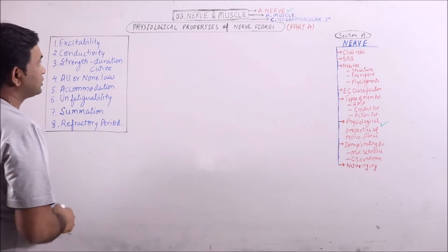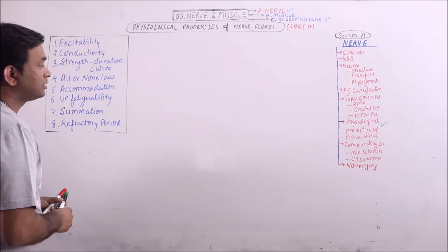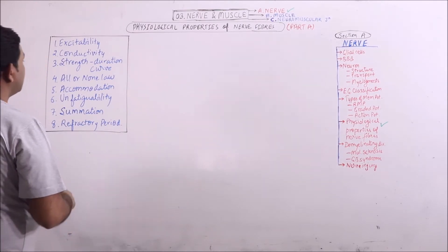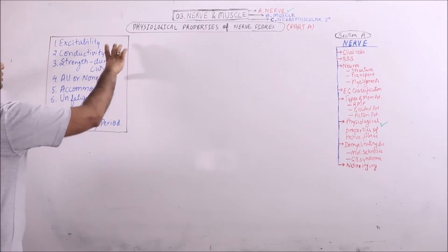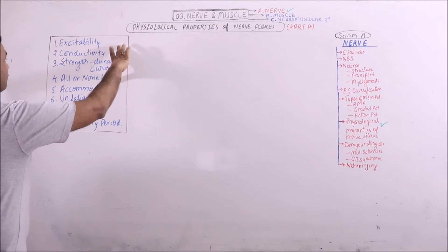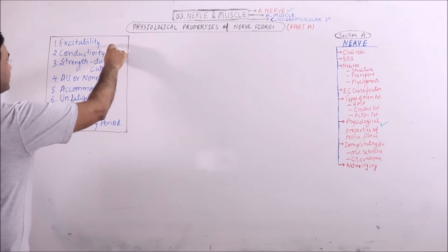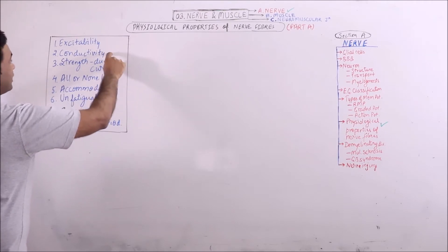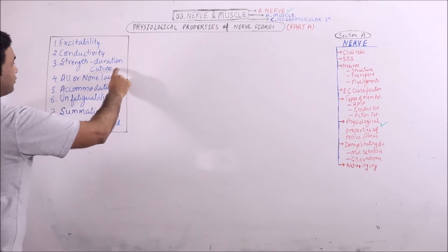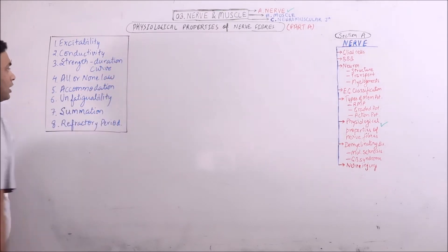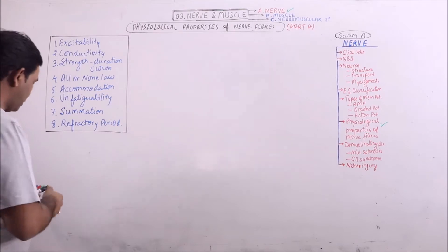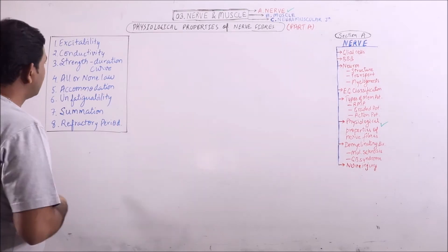We will discuss the physiological properties in two lectures. In the first lecture we will discuss the upper four properties: excitability, conductivity, strength-duration curve, and all or none law.